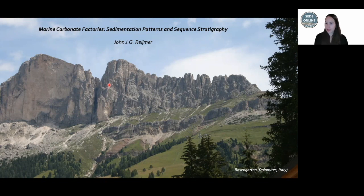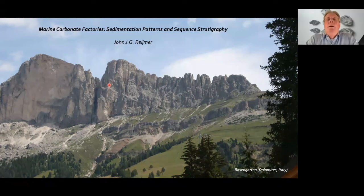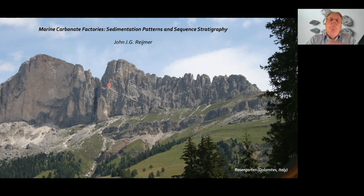Next question from Unai from Spain: you've talked about carbonate production during high-stand and low-stand systems. What about falling-stage systems tracks and TST settings — is there any kind of typical TST and FSST deposition for the five different carbonate factories? John responds: the high stand and low stand are pretty clear in most systems, but the falling-stage systems tract is interesting — when you go to a tropical carbonate factory, as soon as you pass the edge of the platform and expose the shallow water carbonate factory, you stop the system.